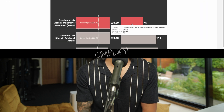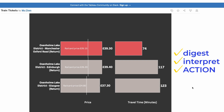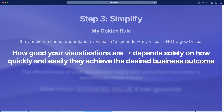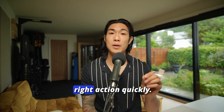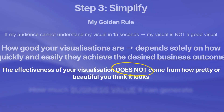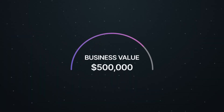Step three: simplify. I have this golden rule that if my audience cannot understand my visual in less than 15 seconds — maximum 30 seconds at best — then my visual is not a good one. The simpler your visual, the quicker and easier your audience will digest, interpret and action it. How good your visualizations are depends solely on how quickly and easily they achieve the desired business outcome — enabling your stakeholders to take the right action quickly. The effectiveness of your visualization does not come from how pretty or beautiful it looks; it comes from how much business value it can generate.